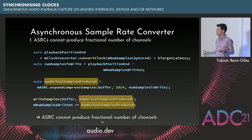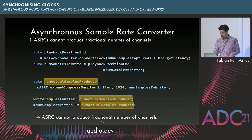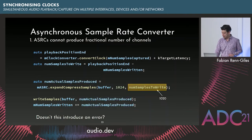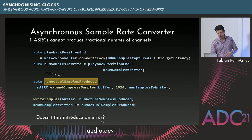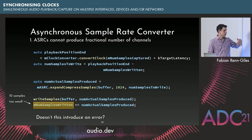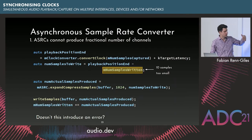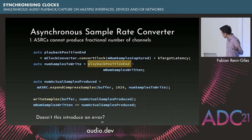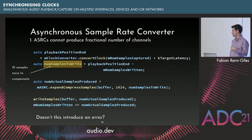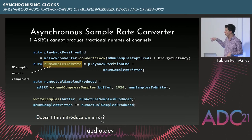You might think: if I'm asking for this many samples but the ASRC is producing a different number, won't that break synchronization? It actually won't. Say num_samples_to_write was 1020, but the ASRC — exaggerated — gave us 1010. That means num_samples_written will be 10 samples too small. But the next time the audio callback is called, as long as playback_position_end has been calculated accurately, num_samples_to_write will be 10 samples larger to compensate. This algorithm always accounts for errors from previous rounds, always trying to catch up to the end of the buffer — that's why we synchronize to the end of the audio buffer.